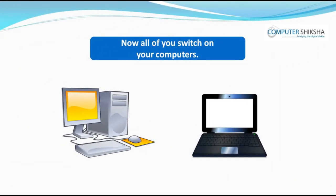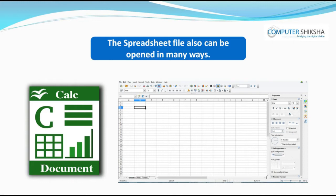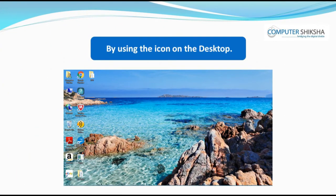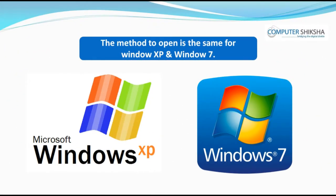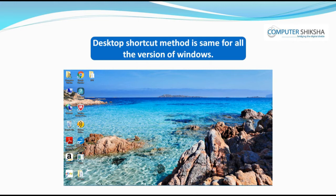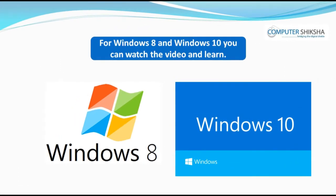Now, all of you switch on your computers. Let us learn how we open the OpenOffice Spreadsheet file. The spreadsheet file can be opened in many ways: by the stepwise method, by using the icon on the desktop, or by using the shortcut command. The method to open is the same for Windows XP and Windows 7. However, in both Windows 8 and Windows 10, the stepwise method differs. The desktop shortcut method is the same for all versions of Windows.